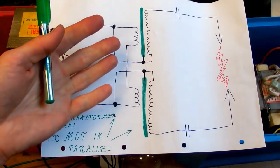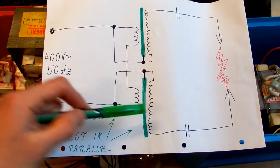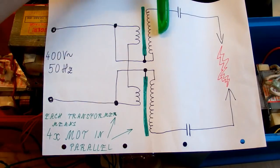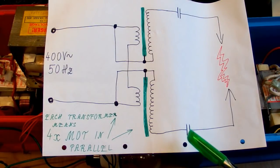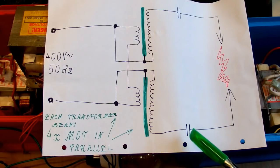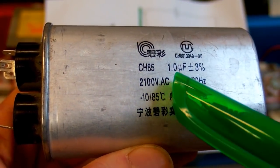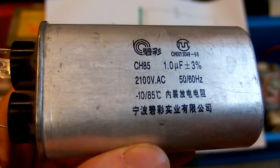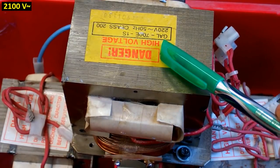So here is the simplified schematic where each of the transformers actually is four transformers in parallel. Basically all four primaries are in parallel and all four secondaries are in parallel. And each of those capacitors is going to be multiple microwave oven capacitors in parallel, maybe eight, nine, ten or eleven. Those capacitors are usually roughly one microfarad and 2100 volts AC rating.